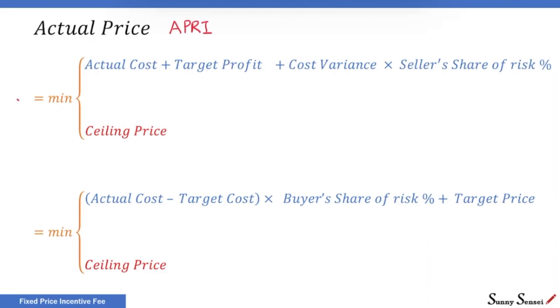This is the first one. It gives the actual price as actual cost plus target profit plus the product of cost variance and seller's share of risk in percent, or the ceiling price. The second formula gives the actual price as difference of actual cost and target cost multiplied by buyer's share of risk in percent, added to target price, or the ceiling price.